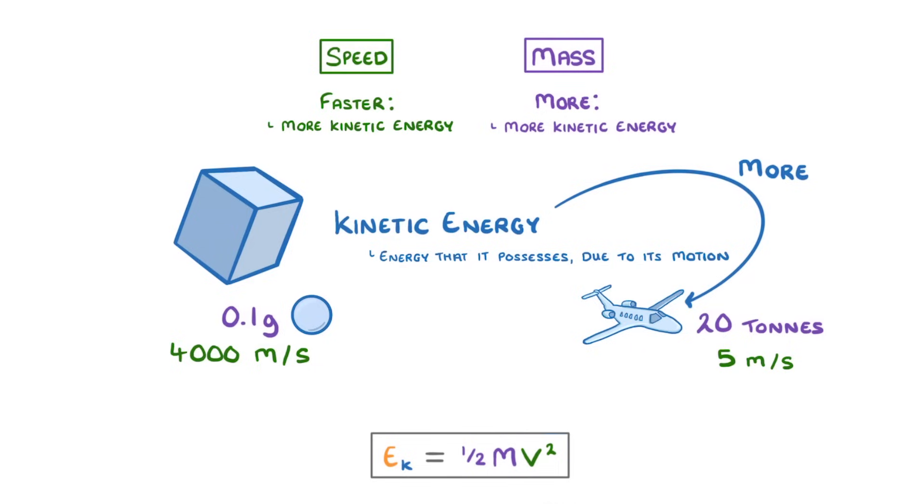So, as with any question, once we have our equation, the next step is to make sure all of our values are in the correct units. So we have to change 20 tons to 20,000 kilos, as there are 1,000 kilos in each tonne, and we need to divide 0.1 grams by 1,000, to get 0.0001 kilos. And we're now ready to plug these values into our equations.